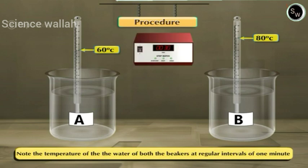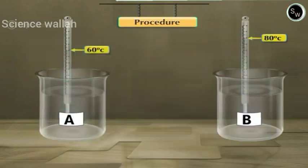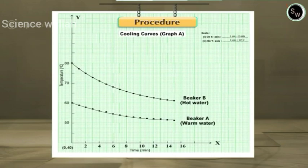Take at least 15 readings. Plot a graph of the temperature theta of the water versus time t in both the cases. This graph is known as a cooling curve. The graphs are shown in the figure.